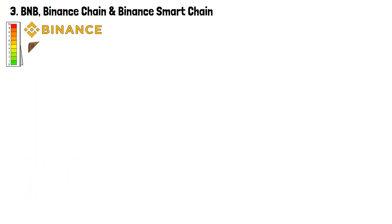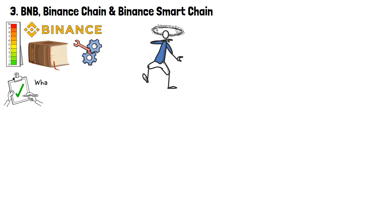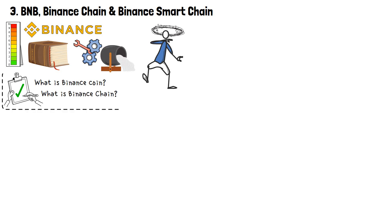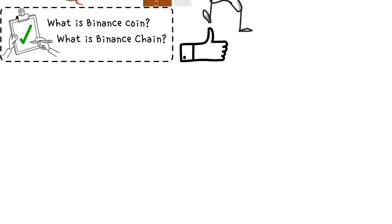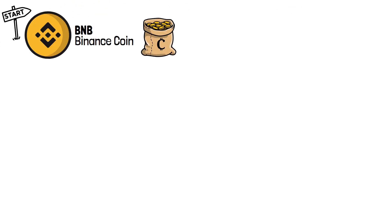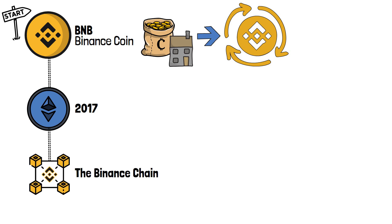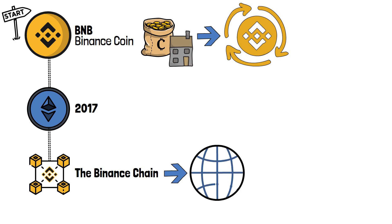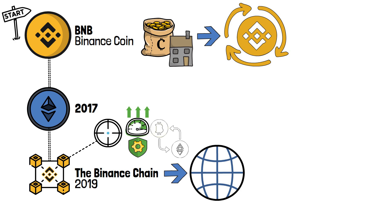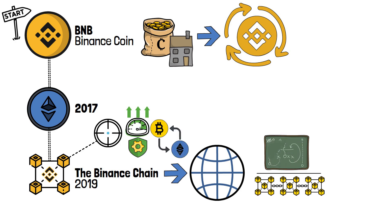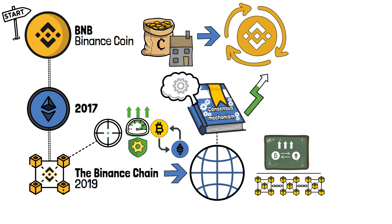Let's cement what we've already established. We began with BNB, short for Binance Coin, a cryptocurrency that serves as the native digital asset of the Binance ecosystem. It was initially launched as an Ethereum-based token in 2017, but later migrated to Binance's own blockchain, the Binance Chain. The Binance Chain is a blockchain network introduced in 2019 with a primary focus of facilitating fast and secure token transfers. Unlike other blockchain platforms, it was specifically designed for the efficient trading of digital assets, employing a simplified consensus mechanism and boasting rapid confirmation times.